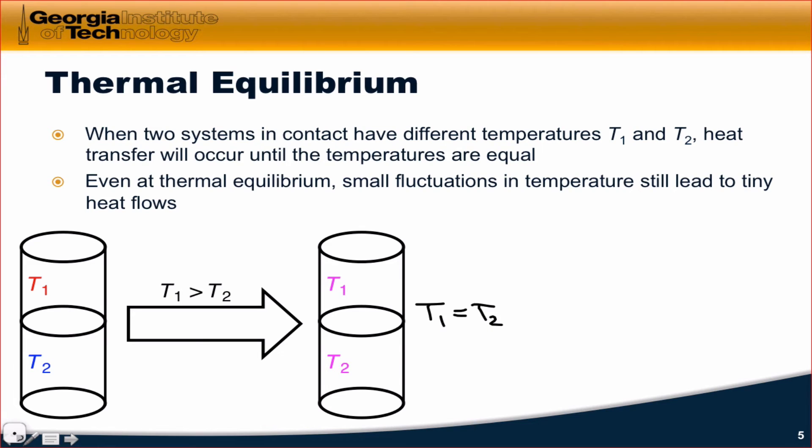One thing worth noting about this, and mechanical equilibrium as well, is that small fluctuations in temperature may still lead to tiny heat flows from the top block to the bottom block and vice versa. In other words, microscopic heat flows may still be occurring. The point is, on the average, the bulk macroscopic state functions of temperature will be equal for the top block and the bottom block. That's the key to thermal equilibrium.